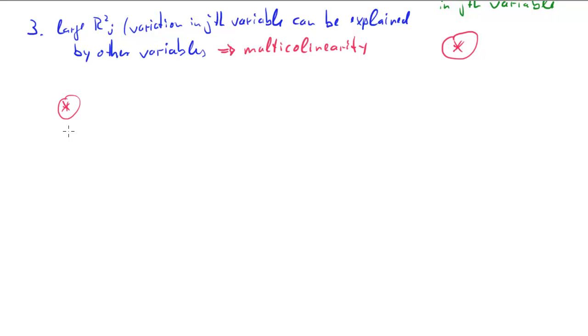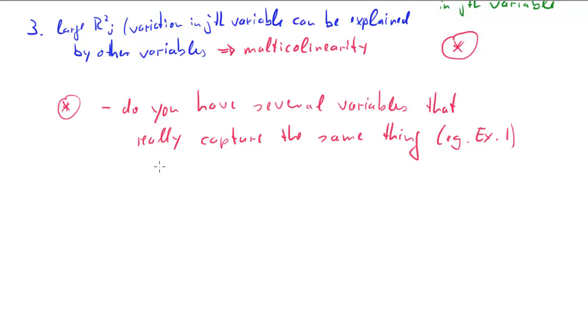The first one, let's consider the case where you have a number of variables that basically capture the same thing. This is what we had in example 1, the income and the tax, but tax was really a function of income. In that case, you should really consider excluding one of these variables. In that case, more variables certainly isn't better. The additional variable mainly serves to inflate the variance here. So exclude one of these variables.